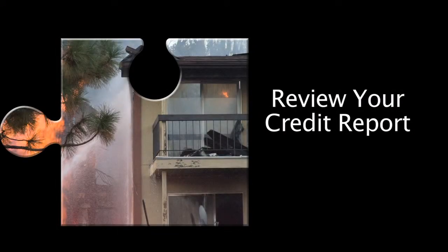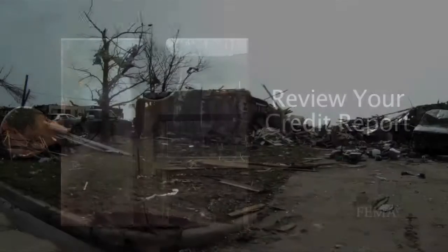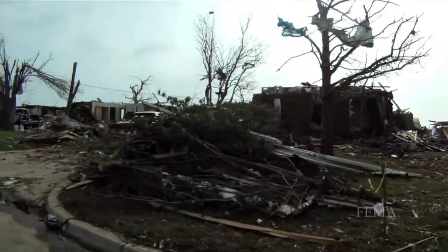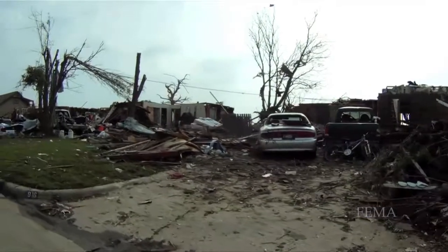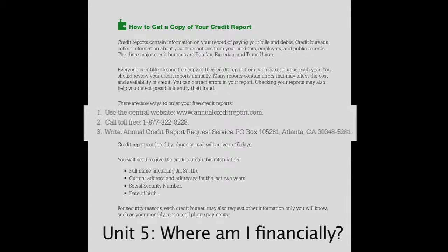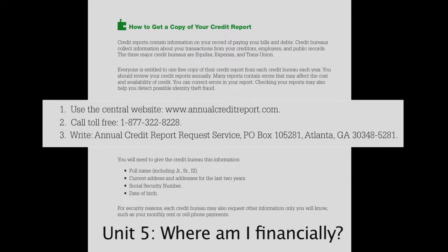Step 4: Review your credit report. If your financial records have been destroyed in the disaster, it is often hard to assess your current financial situation and properly plan for your future. Credit reports can help by filling in some of the missing information about your financial obligations. A credit report will give you a current snapshot of your financial information, including mortgage, car payments, and revolving accounts such as credit cards. Order your free credit report by visiting the website, calling toll-free, or by writing in.